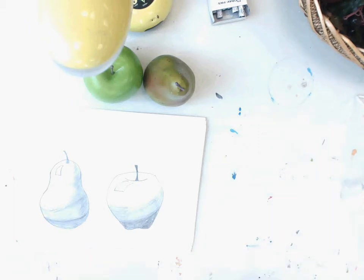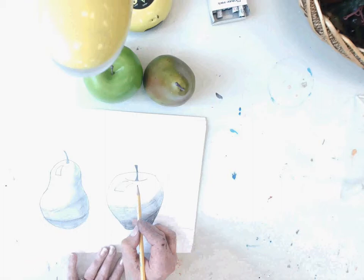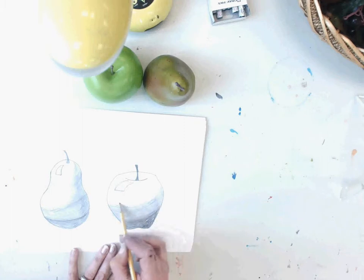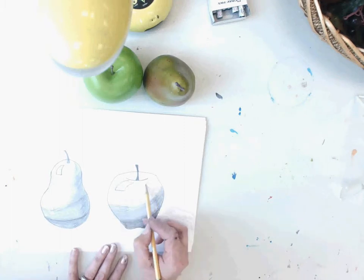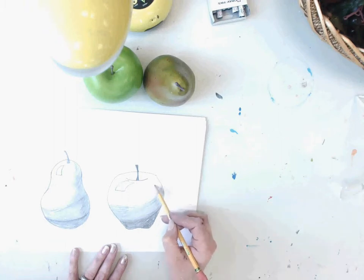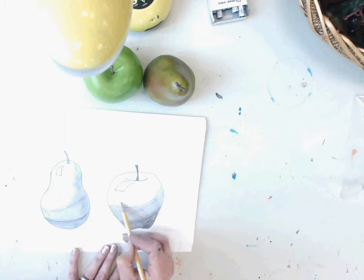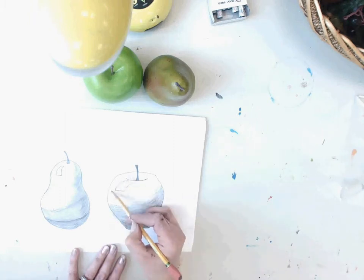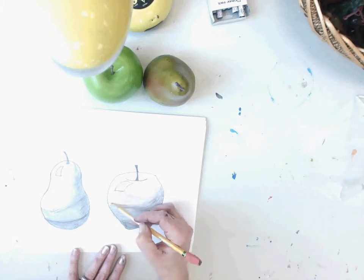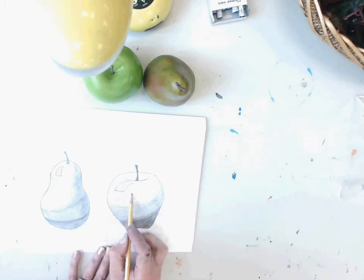Our last step is to give just a light tone to the remainder of the apple. And again, long curved strokes makes for a realistic project, a realistic-looking apple. Fill in the entire apple, except for the section that's going to remain bright white.